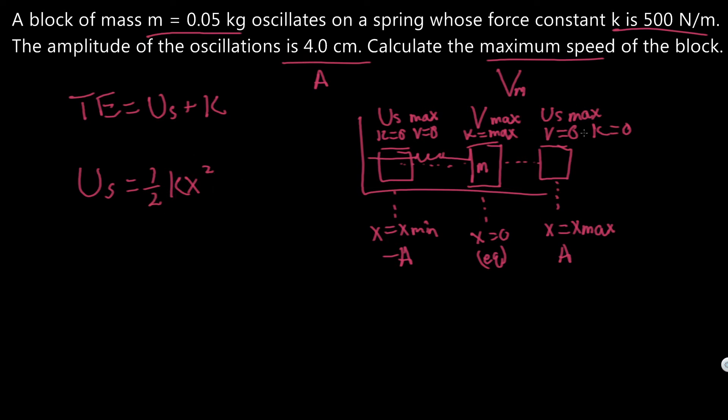We want to see what the maximum potential energy is, right? Because if it's at its maximum, then K is at zero, so we just know what the total energy is. Let's rewrite that as potential energy equals one half k A squared, the amplitude.